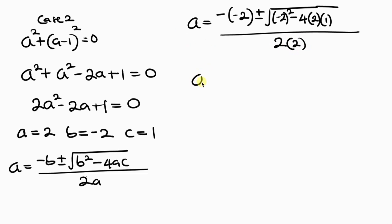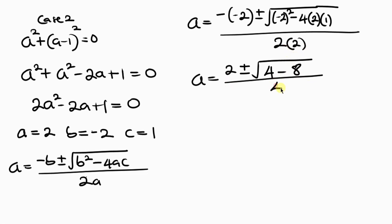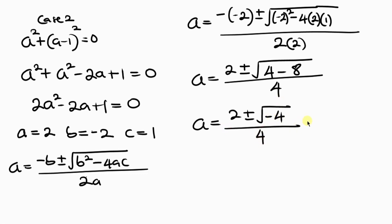Simplifying, negative times negative is positive so we have positive 2 plus or minus the square root of 4 minus 8, all over 4. Now 4 minus 8 is negative 4, so we have 2 plus or minus the square root of negative 4, all over 4. The square root of negative 4 is 2i, giving us 2 plus or minus 2i over 4.